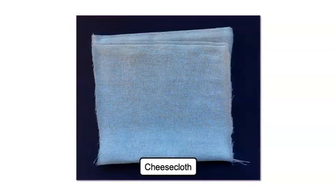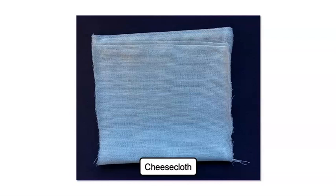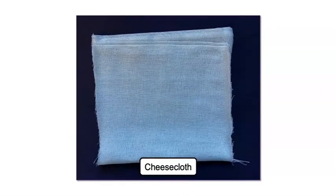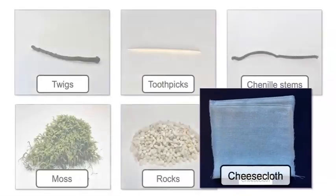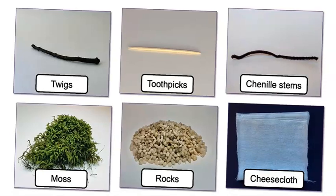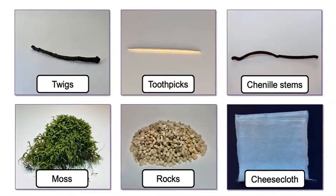What about the cheesecloth? Cheesecloth is a fabric with a lot of tiny holes in it. Cheesecloth is easy to pick up. It is not heavy. Do you think we can use cheesecloth by itself? Or maybe we need to use cheesecloth with another material. Should we use more than one material in our model? I wonder if using more than one material could make the shoreline protection system stronger. What materials could we put together?